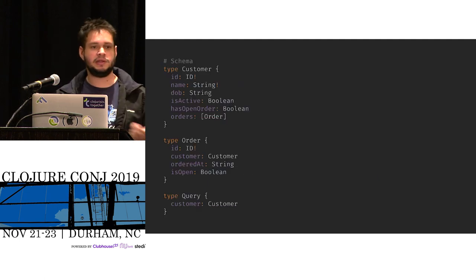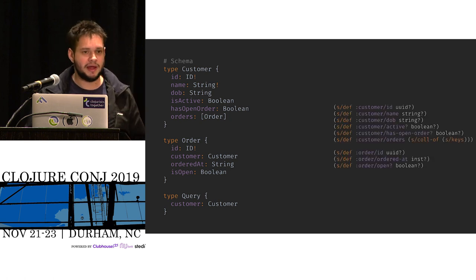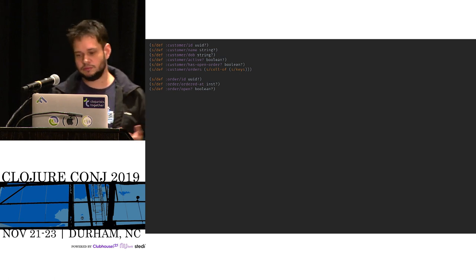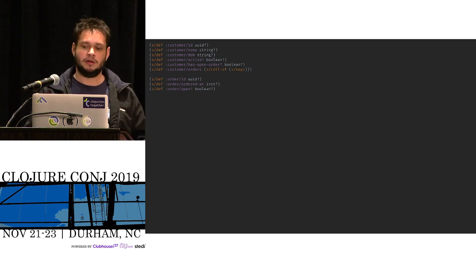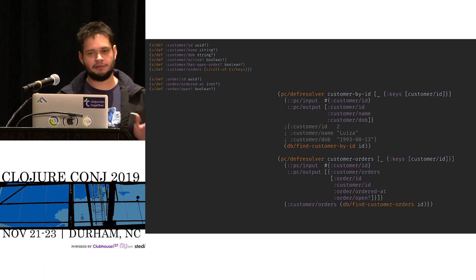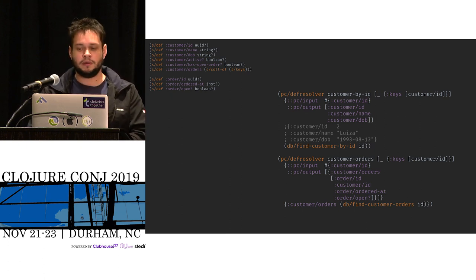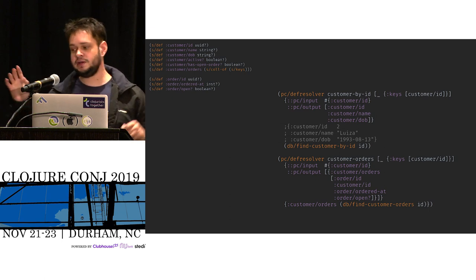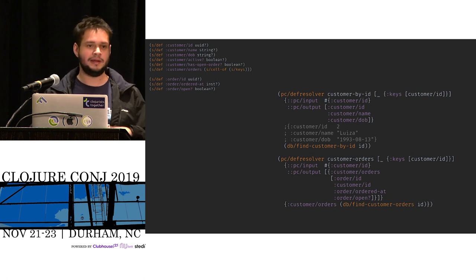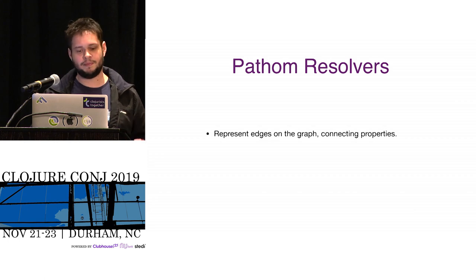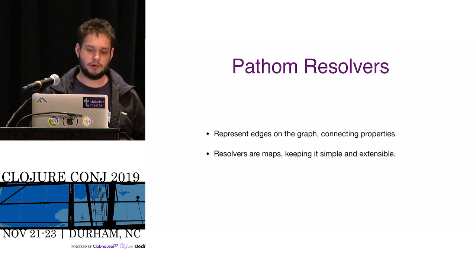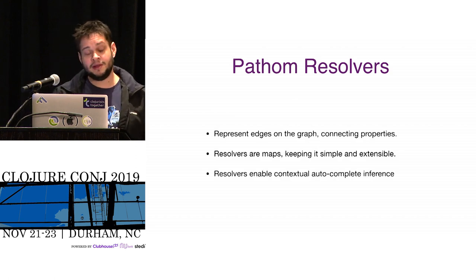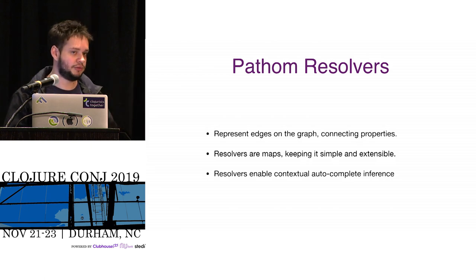If we were to define the same schema with EQL and Pathom, you just write the specs. In the Pathom sense you don't even need the specs, but they're great to have because they inform your users about what to expect. The resolvers are where they diverge a lot. Resolvers in Pathom are edges on a graph — they connect properties. Properties enter the system when you add the resolver. You can say: if you give me a customer ID, I can give you this data. Or: if you give me orders, I can give you this data. That's how you build up the system. In Pathom, resolvers are maps — simple to understand, mix, generate, anything you want.